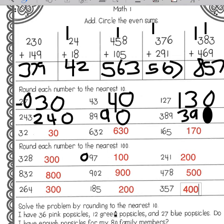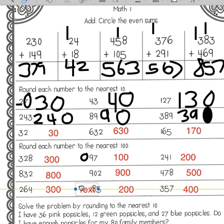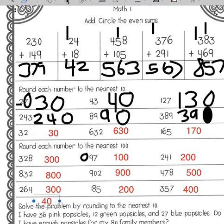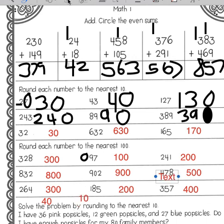Solve the problem by rounding to the nearest ten. I have 36 pink popsicles, 12 green popsicles, and 27 blue popsicles. Do I have enough popsicles for 80 family members? So 36 is going to round to 40, 12 rounded to the nearest ten will be 10, and 27 will round to 30.